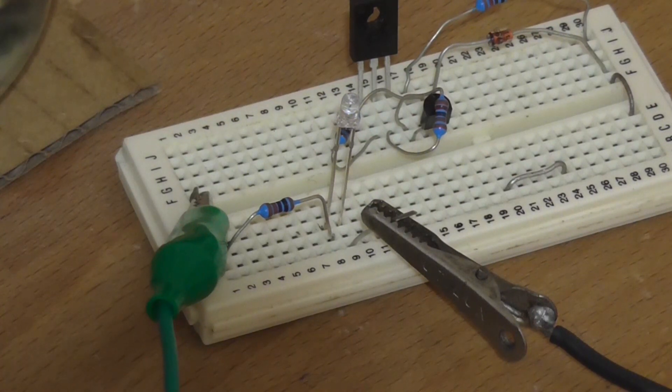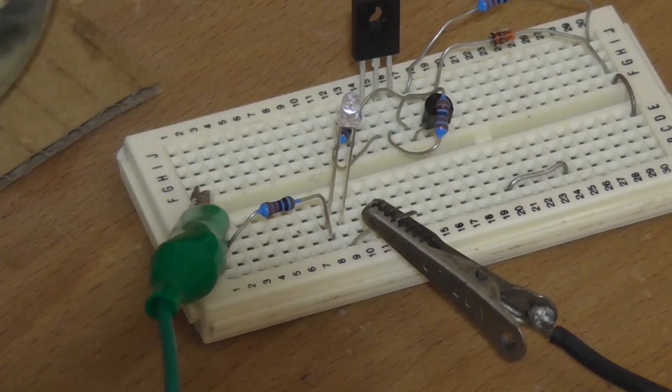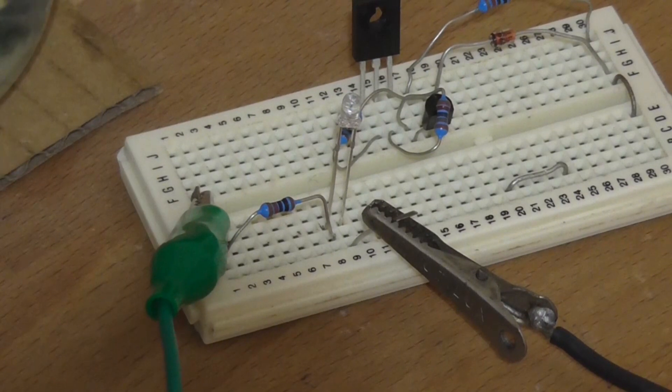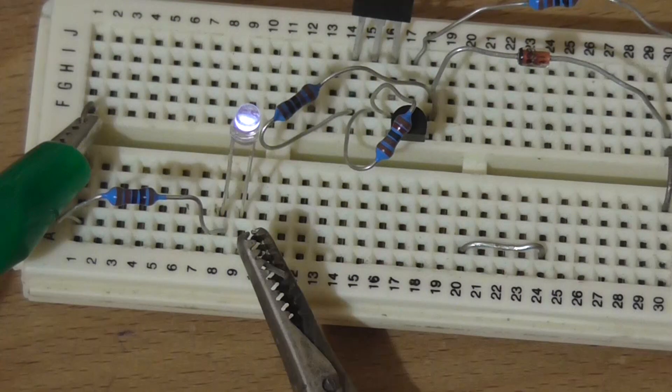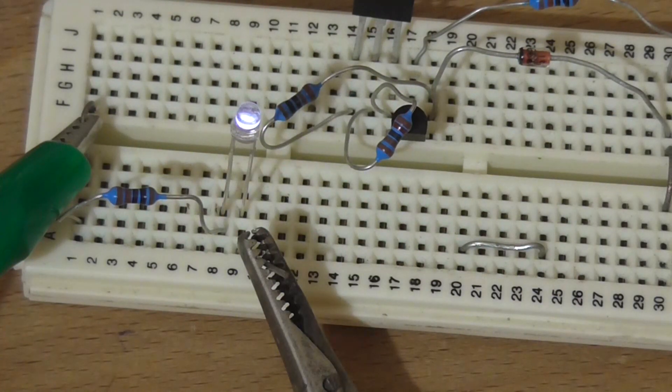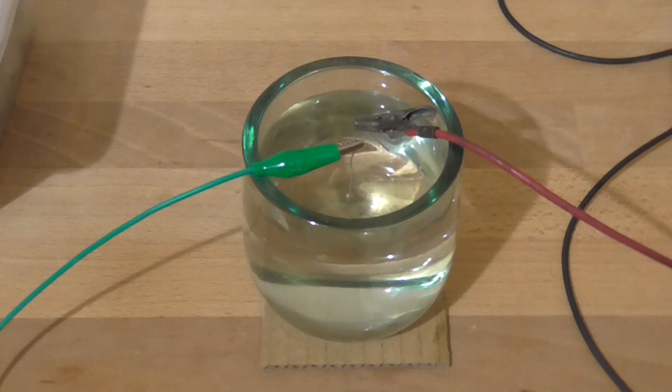So, it doesn't really matter where, or how close to the positive source coming in that I put this, it is conducting electricity. See how that is actually glowing? It's probably about a third of its original brightness. But yes, as this simple little experiment proves, water can conduct electricity.